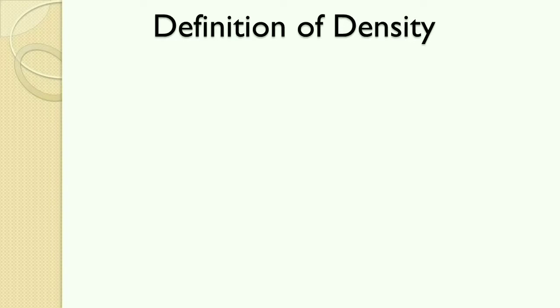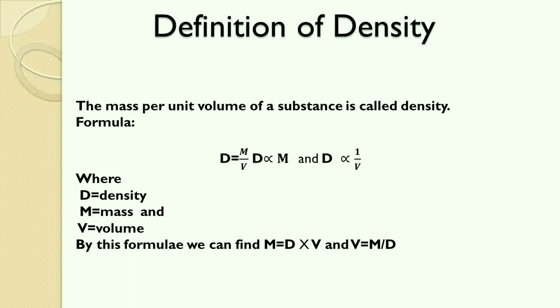In this chapter we are learning about different physical quantities and their measurement. Our next physical quantity is density. The mass per unit volume of a substance is called density. In other words, we can say that density describes how tightly packed a mass is in a certain amount of space, or in short, density is the ratio of the mass and the volume of a substance.